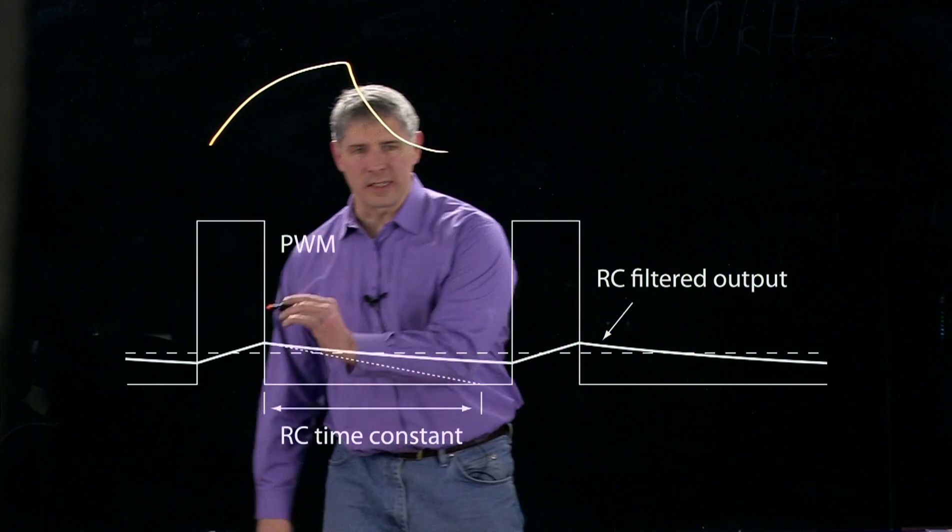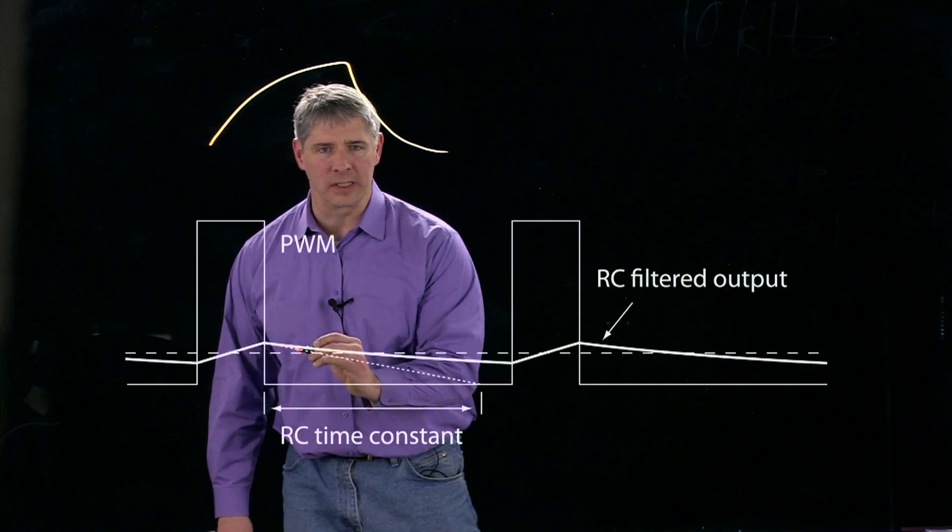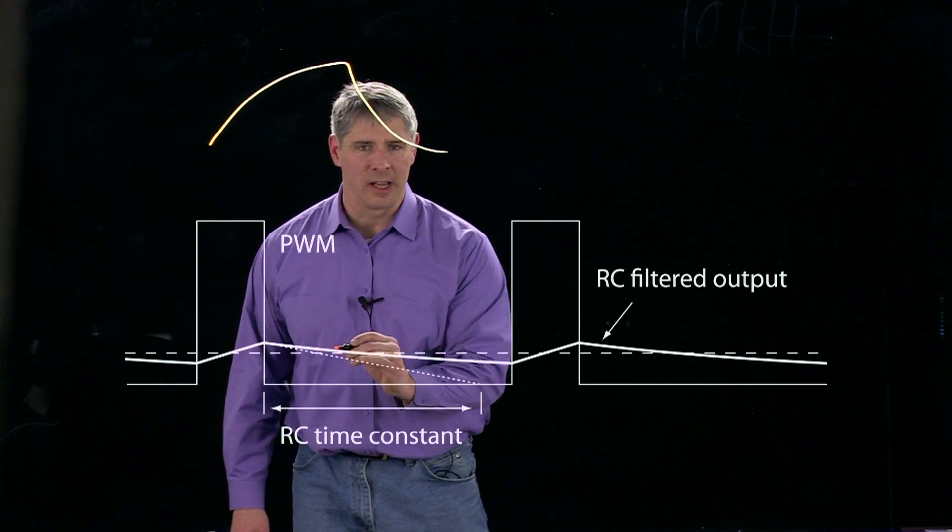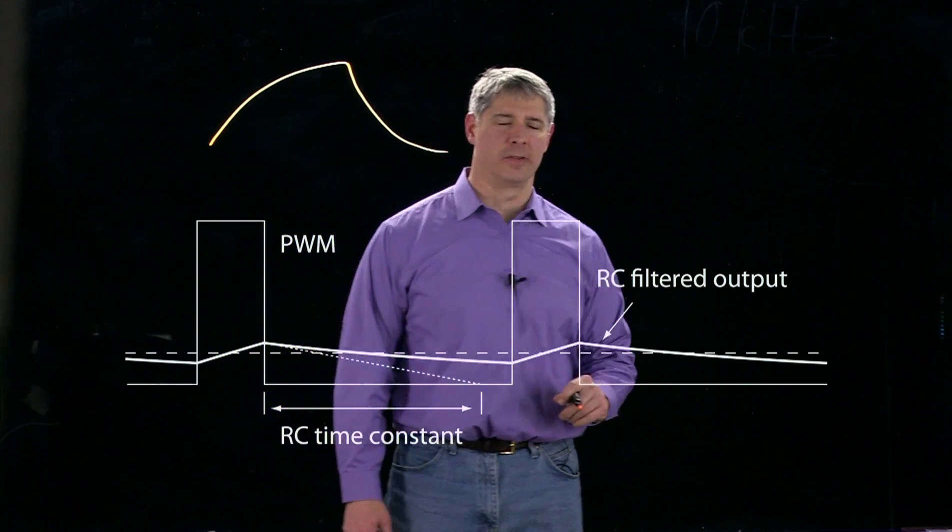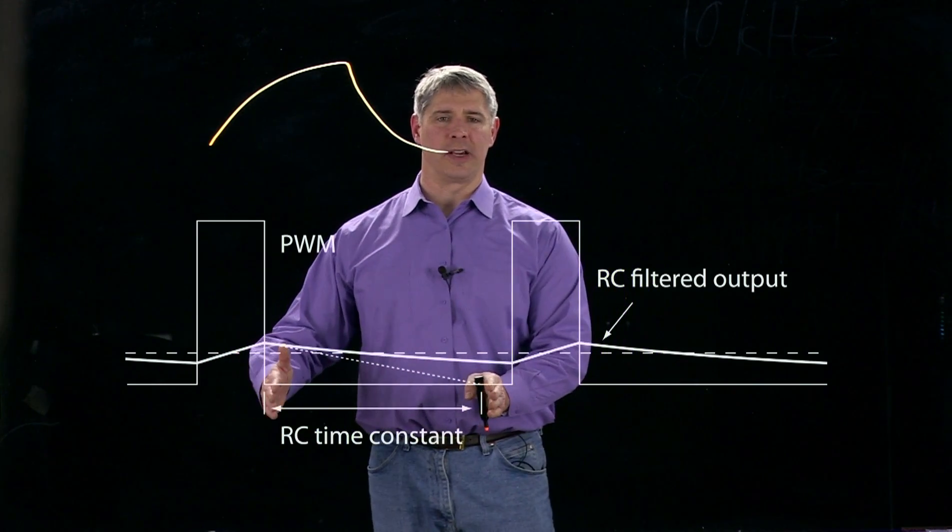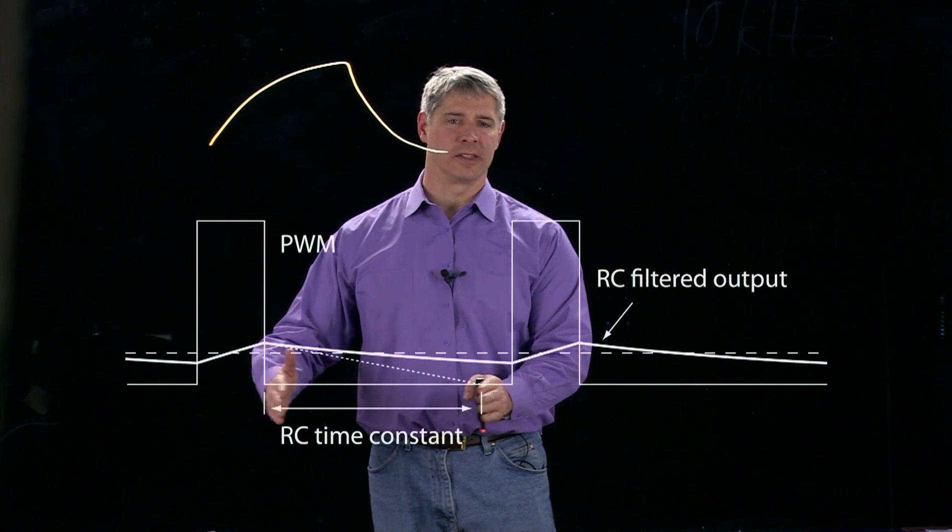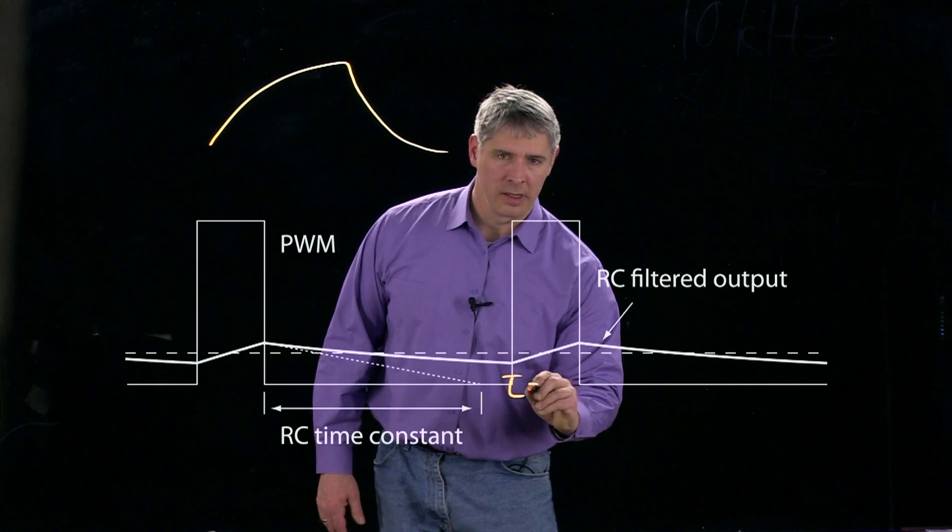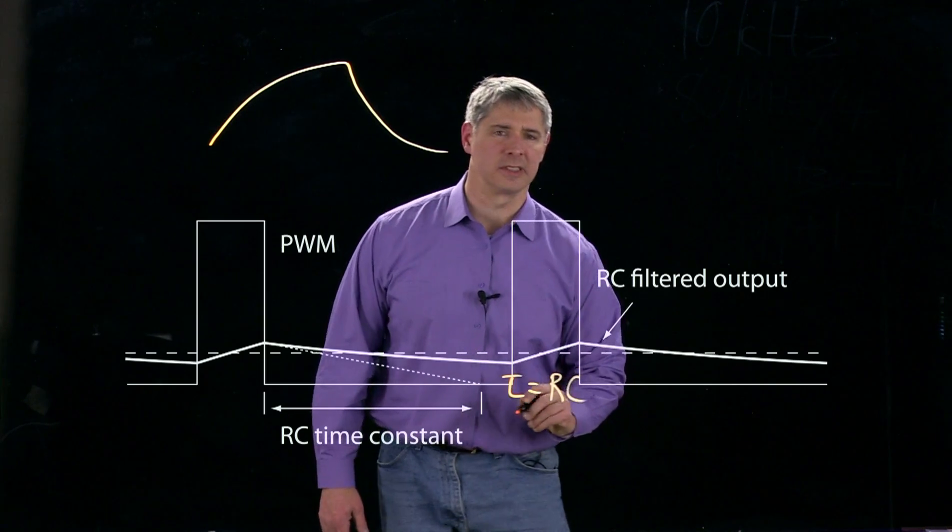And if we extend this asymptote out here, so when it starts out discharging, if we extend that asymptote down to when it reaches zero volts, then that duration there is called the RC time constant. So that's just tau is equal to resistance times the capacitance.